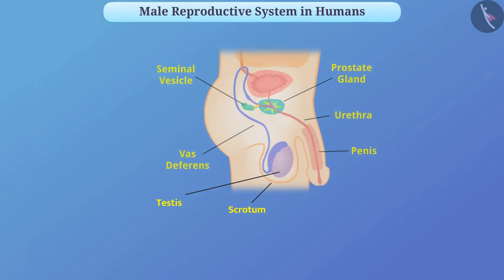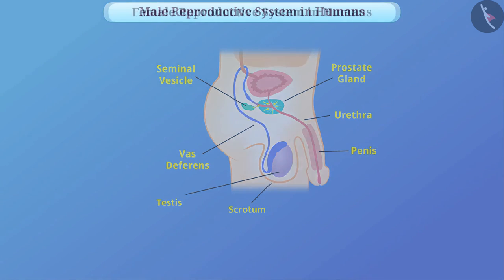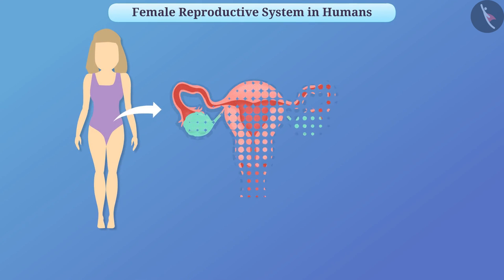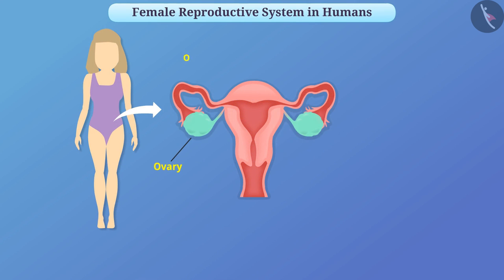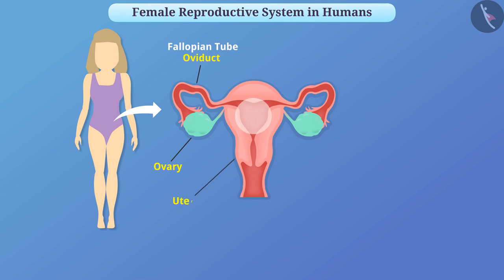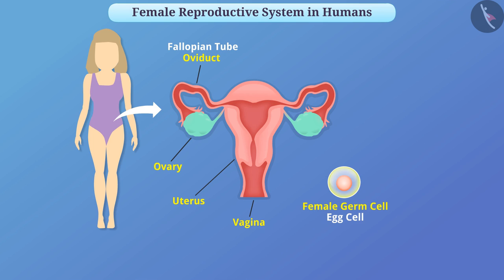Now let us understand the female reproductive system in humans. The female reproductive system consists of ovaries, oviducts which are also known as fallopian tubes, the uterus, and the vagina. A female germ cell called an egg cell is formed in the ovary.